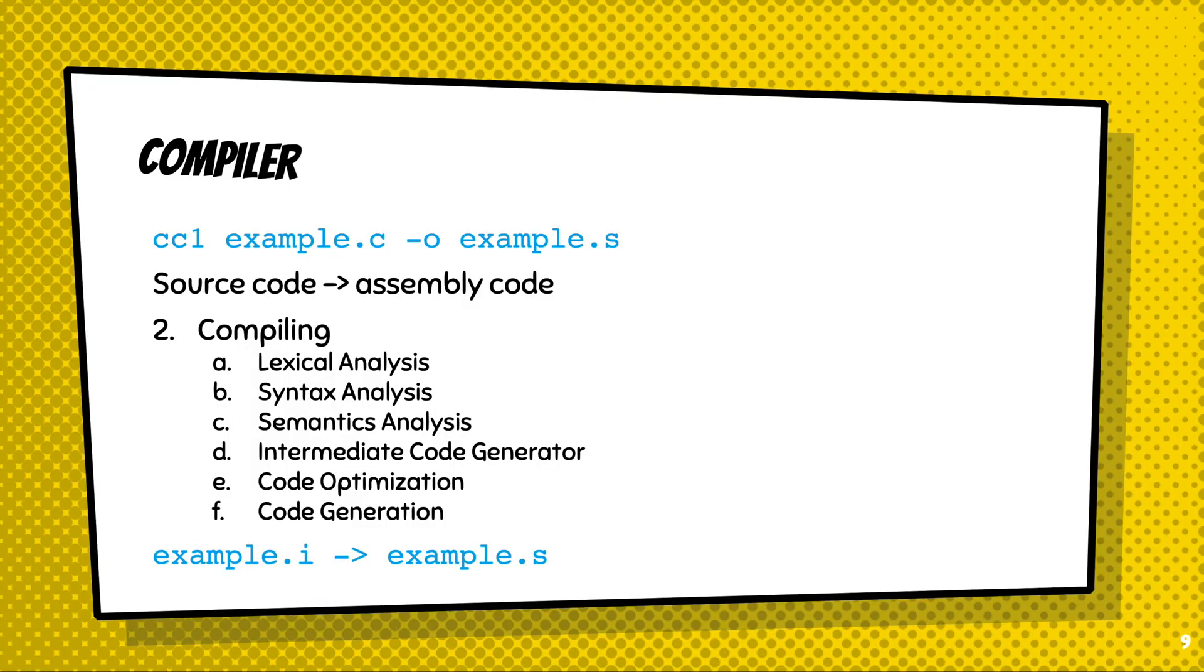In the next step, given example.i, the preprocessed result, the compiler will turn it to assembly code. This is the key process of compilation, and there are many steps. We're not going to go into the details of each step. Instead, we're going to give you a brief introduction. For more information about compilation, I recommend you check compiler courses.